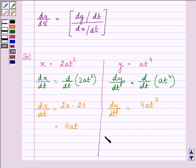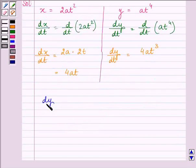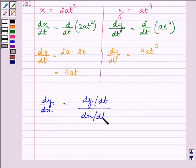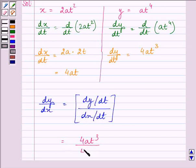Now, as discussed in the formula above, to find dy/dx, we will be dividing dy/dt by dx/dt. Then we have 4at³ divided by 4at.